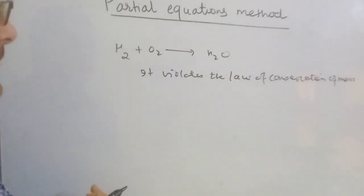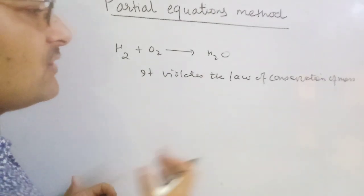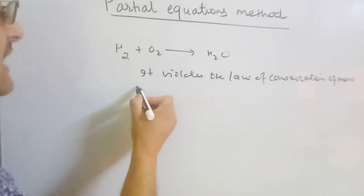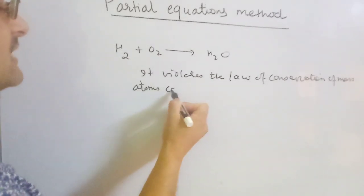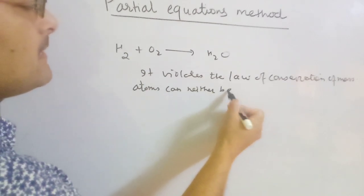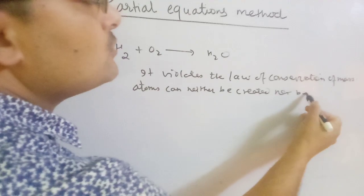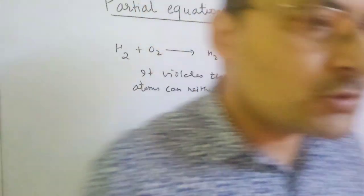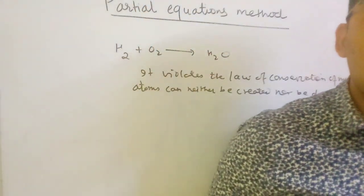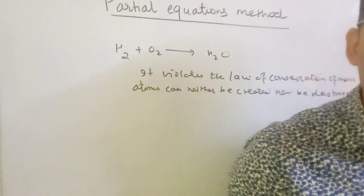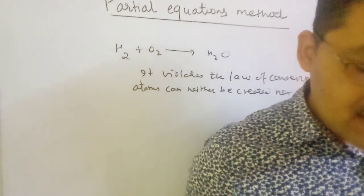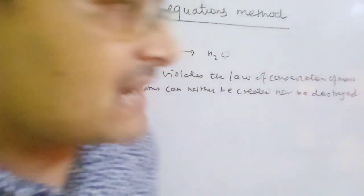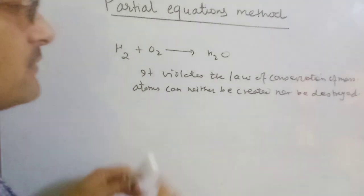So if you want not to violate the law of conservation of mass in the reaction, then you must balance this reaction. Atoms can neither be created nor be destroyed. Atoms are not created and not destroyed in chemical reactions — only nuclear reactions are reactions where atoms can be created or destroyed. So you must balance the chemical equation to favor the law of conservation of mass.